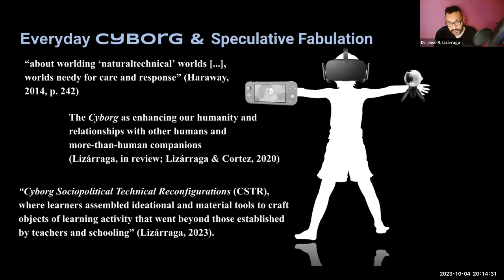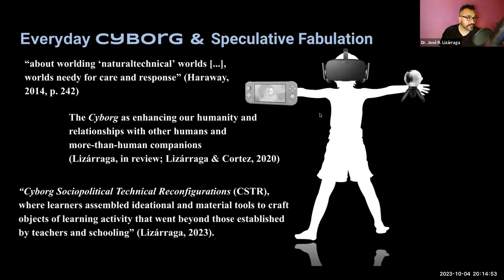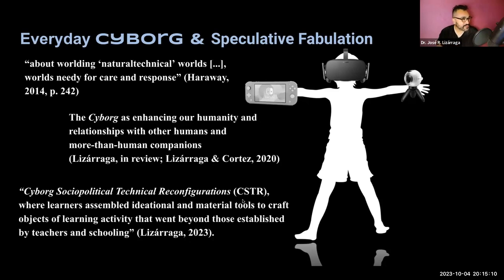What I explore in my work in particular is these practices that I call the cyborg sociopolitical technical reconfiguration, where learners assemble ideational and material tools to craft objects of learning activity that went beyond those established by teachers and schooling, and that have some consequence to our everyday lives. You'll notice this little illustration actually has a Nintendo Switch and other types of digital technologies. For me, the Nintendo Switch was actually one of those instrumental technologies during the pandemic that helped me do some of this sociopolitical reconfiguration.